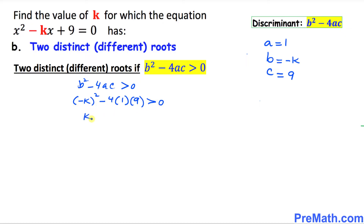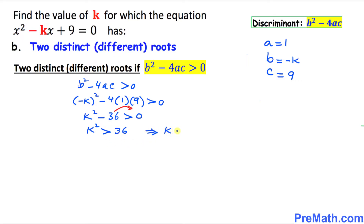This simply becomes k squared minus 36 is greater than 0. Moving 36 to the other side, we get k squared is greater than 36. This tells us that k is less than negative 6 or k is greater than 6.